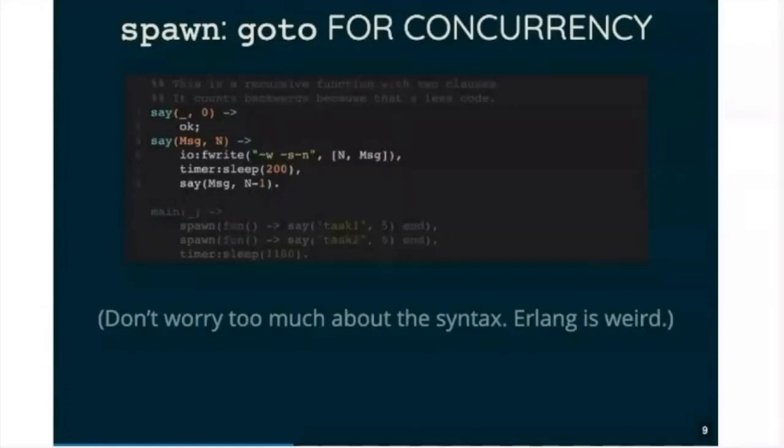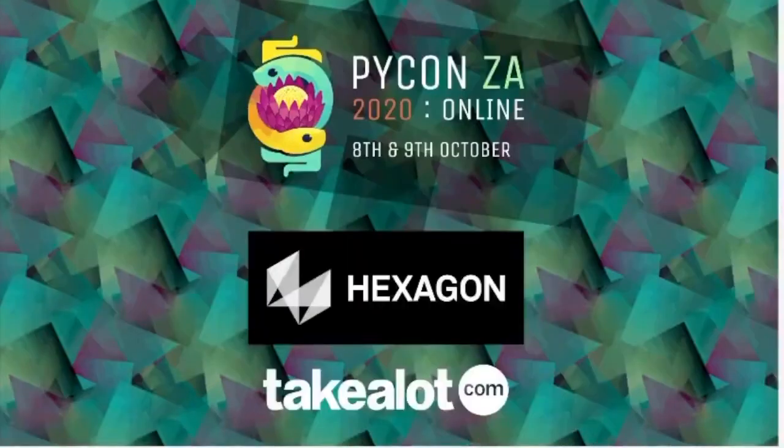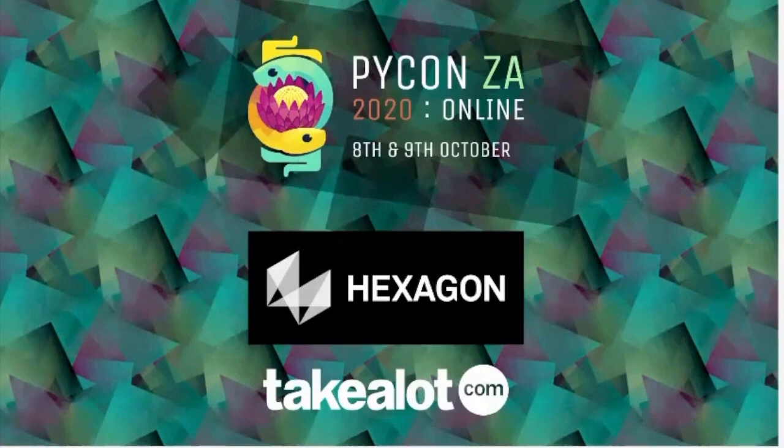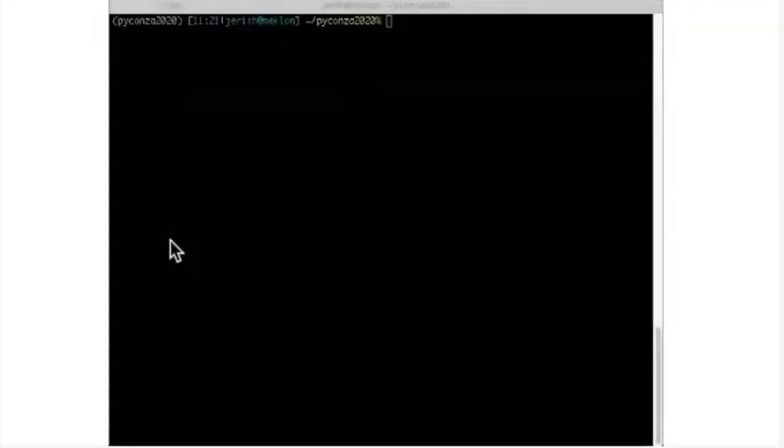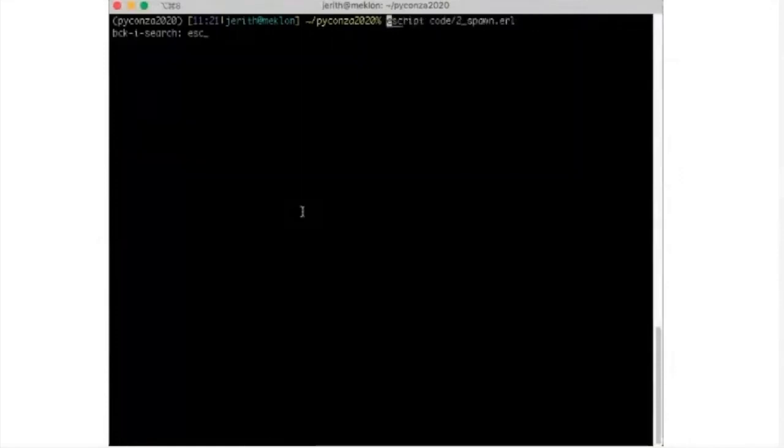And then the thing that makes it concurrent is in the main function here, we spawn it once with task one as the message, and then we spawn it a second time with task two as the message, and then we just wait for them to finish. So I will actually switch the presentation thing and run this, if I can find the right window.